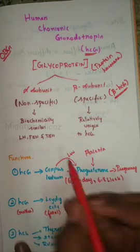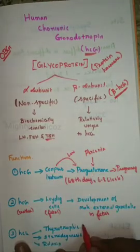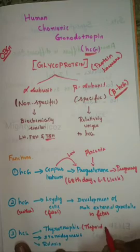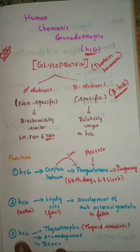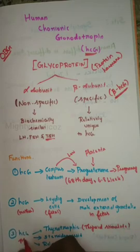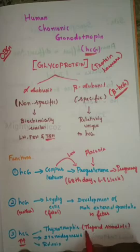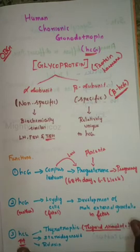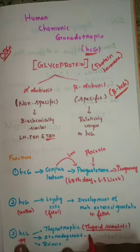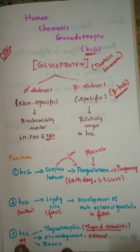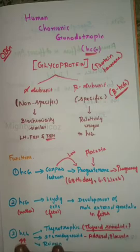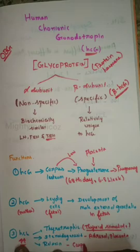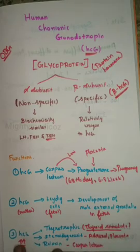Because HCG shares its alpha subunit with TSH, it has a thyrotropic effect. It stimulates the thyroid gland, and thyroid hormone is produced. When HCG is produced in excess, there will be symptoms like hyperthyroidism. HCG also stimulates the adrenal gland and placenta to produce steroidogenesis — estrogen, progesterone, and steroid hormones — and by stimulating the corpus luteum, relaxin hormone is produced.